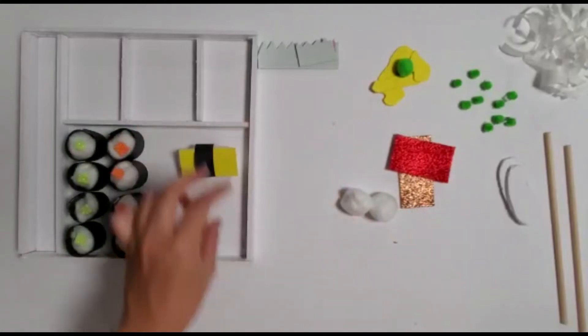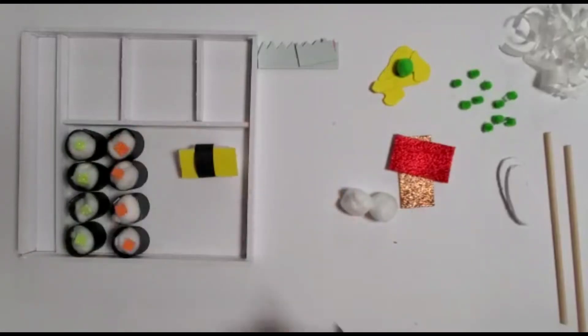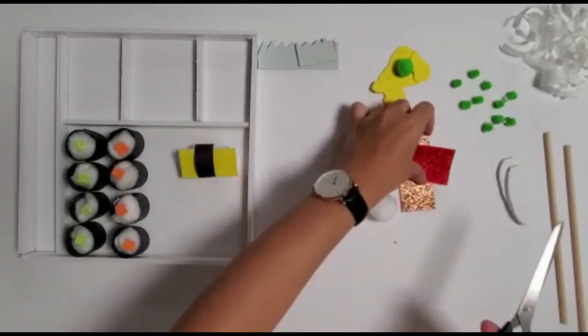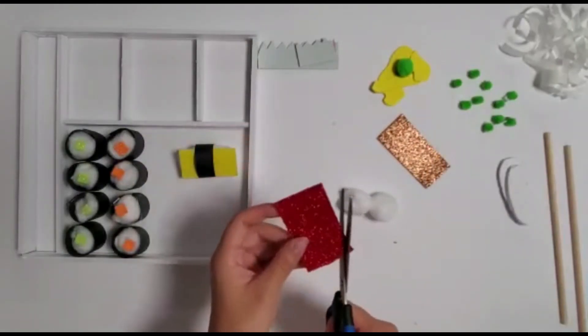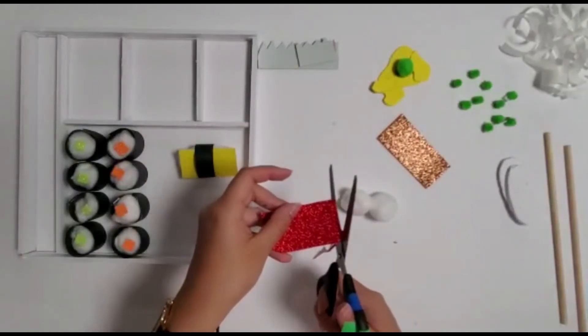Place it into the same section as the rolls. For the two remaining sushi, cut the glitter foam stickers into rounded rectangles to resemble slices of fish.